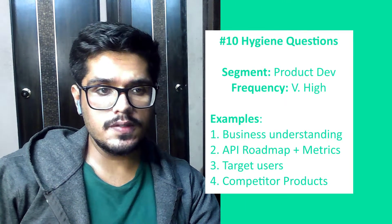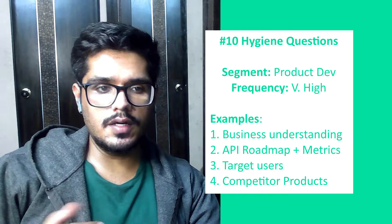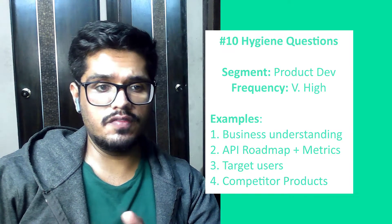Finally, question ten is hygiene-based questions. You need a basic understanding of the API business, the personas, how an API product roadmap looks — which is a little different from a platform or app product — how you can improve an API, and the metrics you track. Broadly, these are the 10 questions you should absolutely know going into an API product manager interview. I hope this video was helpful — subscribe to the channel, drop a like, and share it with a friend. See you in the next one.